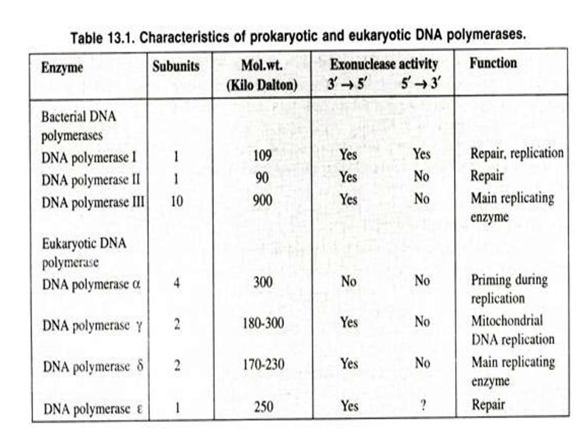In the case of eukaryotic DNA polymerases, we have DNA polymerase alpha, gamma, delta, and epsilon. DNA polymerase alpha has 4 subunits, gamma has 2, delta has 2, and epsilon has 1 subunit. The molecular weight for alpha is 300 kilodaltons, gamma approximately 180–300 kilodaltons, delta approximately 170–230 kilodaltons, and epsilon 250 kilodaltons. Alpha does not have proofreading or excision repair activity, whereas gamma, delta, and epsilon all have proofreading activity but no excision repair activity. Gamma is specifically for mitochondrial DNA replication; the other three are involved in nuclear DNA replication.